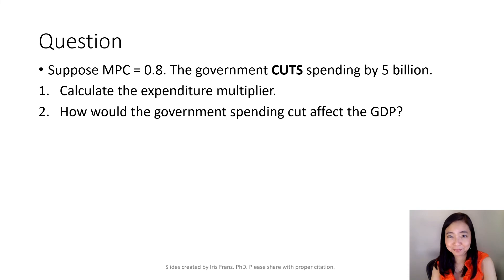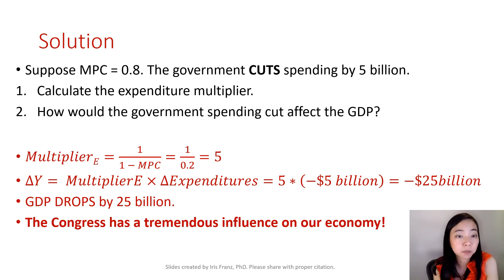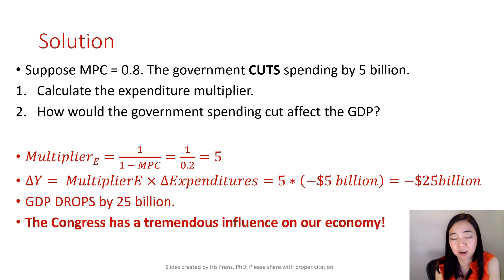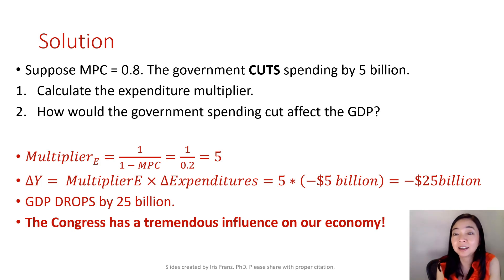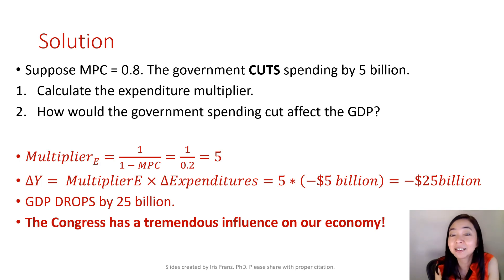So here is the solution. Your expenditure multiplier is equal to 1 over MPS. Your MPS is equal to 1 minus 0.8, so your MPS is equal to 0.2. And as a result, your expenditure multiplier is equal to 1 over 0.2, which gives you 5. How would the government spending cut affect our GDP? The change in GDP is equal to the expenditure multiplier times the change in expenditure, which is 5 times negative $5 billion, giving you negative $25 billion. So your GDP will go down by $25 billion. The Congress has a tremendous influence on our economy.